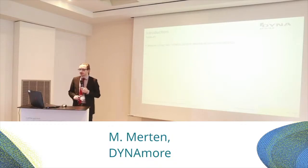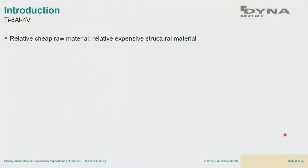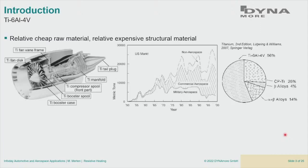Titanium itself as a raw material is rather cheap. What makes titanium expensive is the refining process to the structural material which you can use for constructions. Due to that, it was initially mostly used by military and aerospace industry, and then later by civil aerospace. In the last decades, we also see other applications outside the aerospace industry — implant heads, teeth, sports gear, or even glasses are sometimes made of titanium.